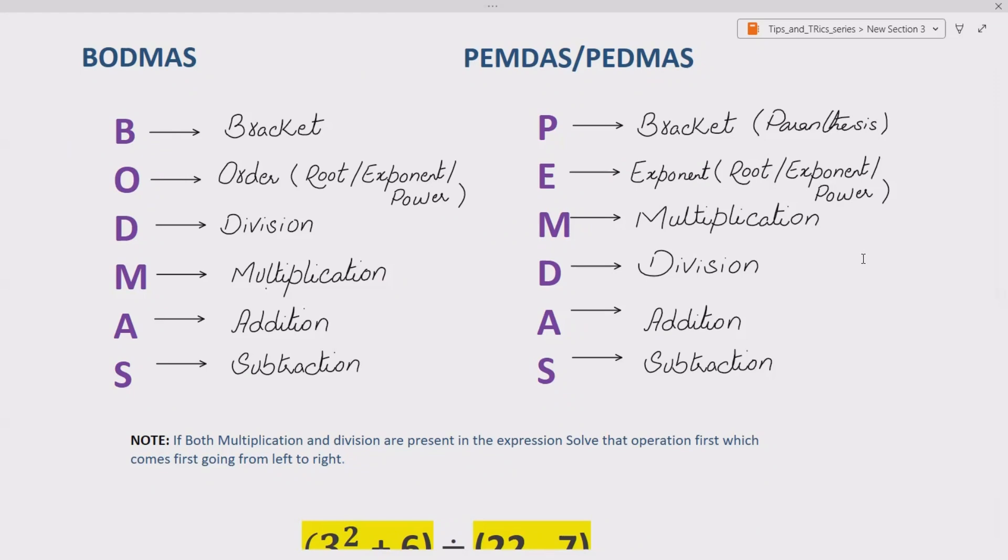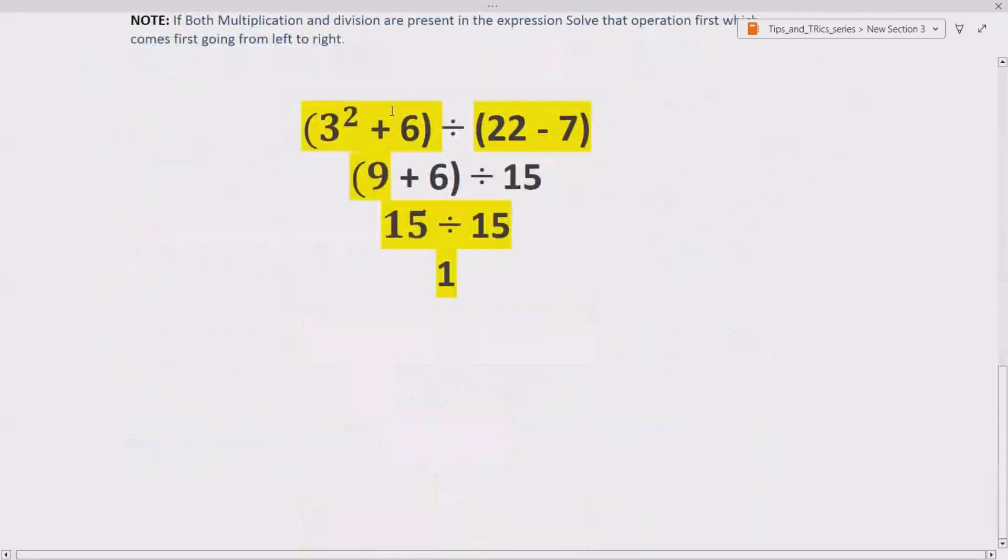Now let's see how we can solve our question. We are given 3 raised to the power 2 plus 6 divided by 22 minus 7. We are solving the brackets first, so we have two brackets we are solving simultaneously.